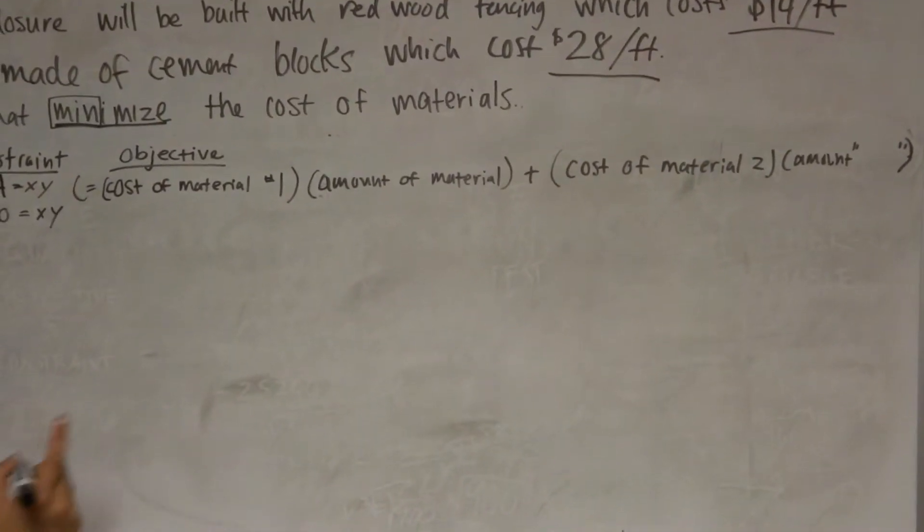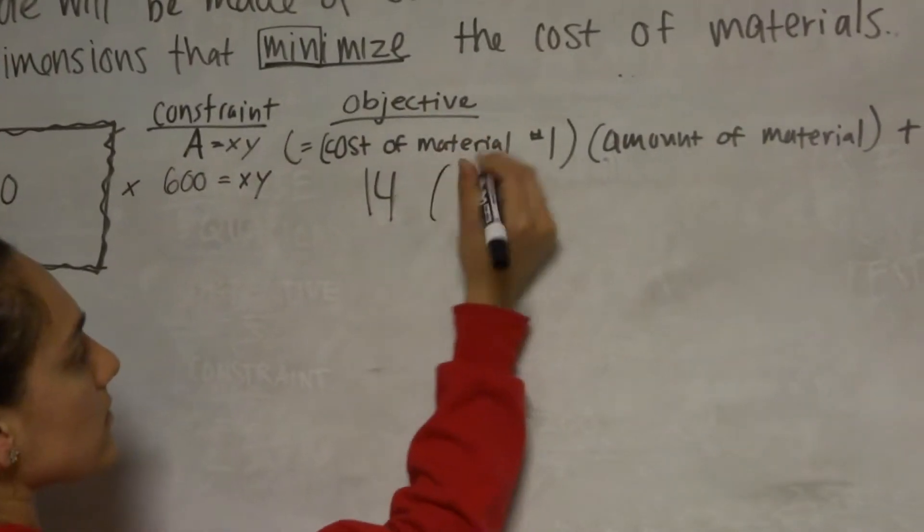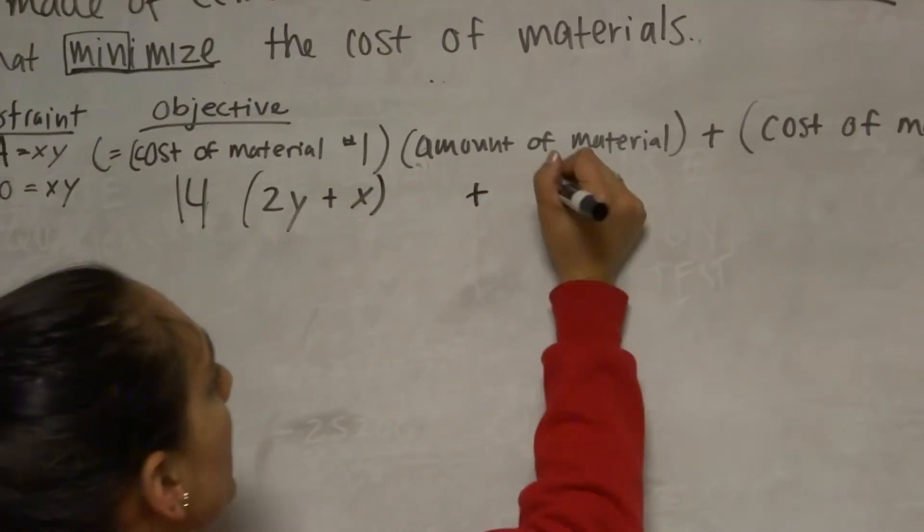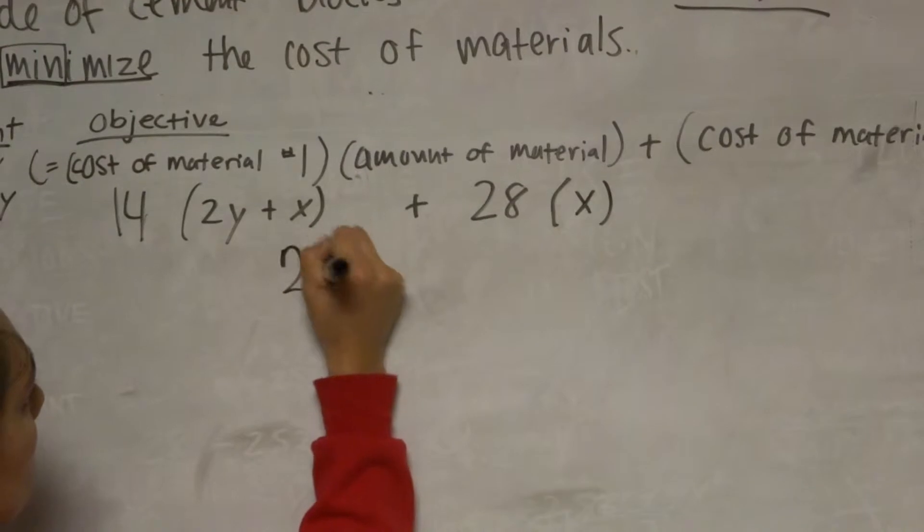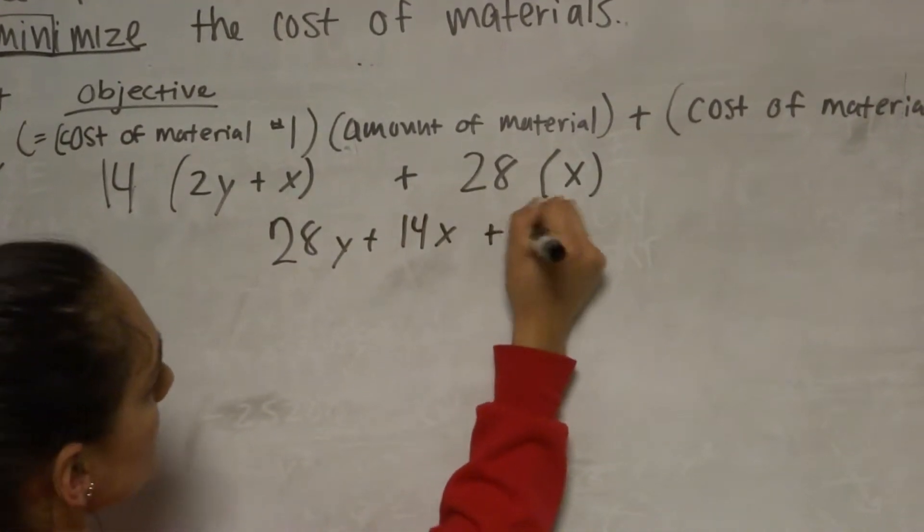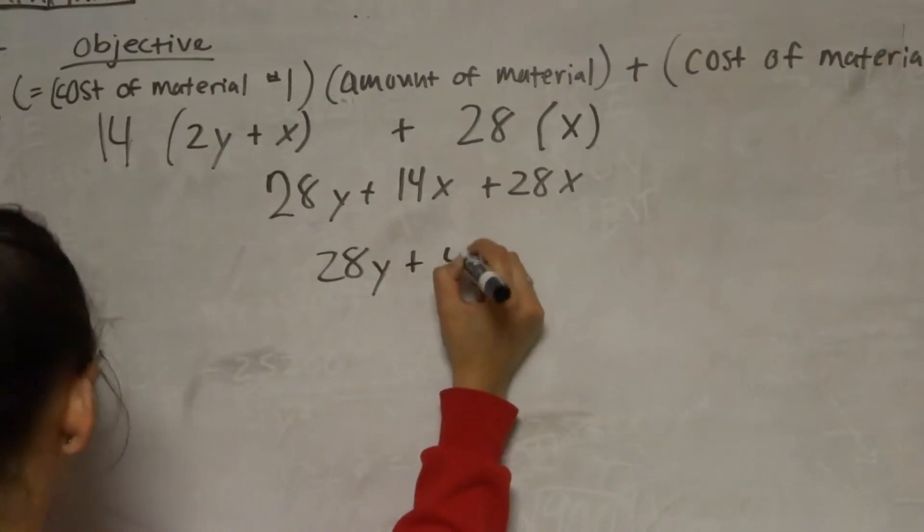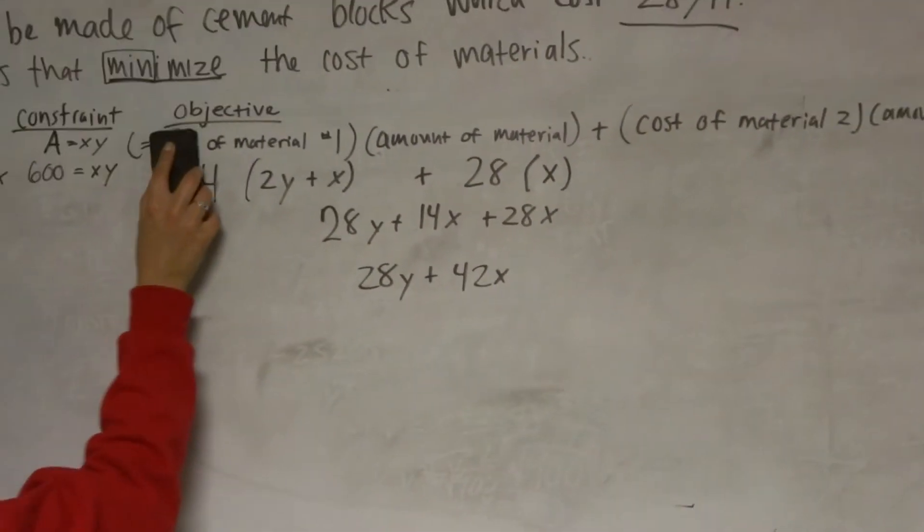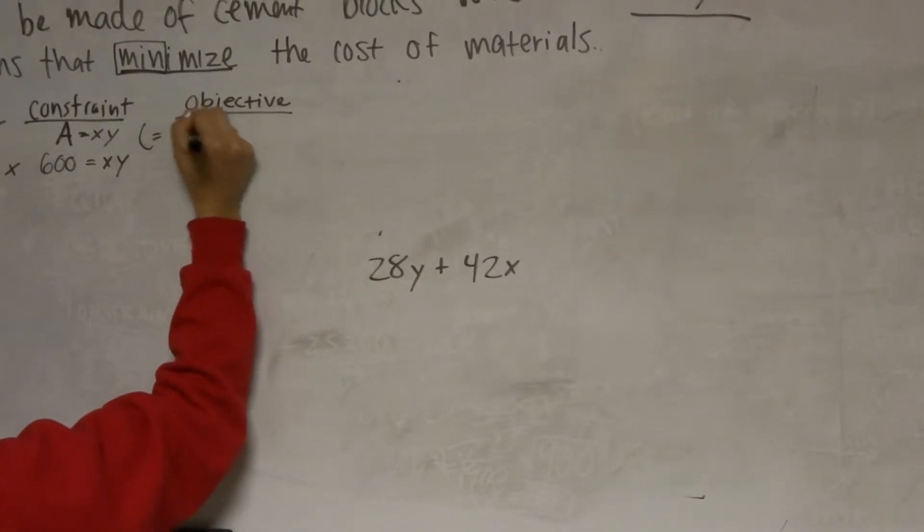Now we can just plug in the numbers. Our first material is $14, which is the redwood fencing, and it has three sides, so two y's and an x. So multiply that by 2y plus x. Then we add the second material, which is $28, times the amount, which is just one side. It says x, sorry for the other way. You can multiply this out, and you get 28y plus 14x plus 28x, which simplifies to 28y plus 42x. I'm going to erase all this for space, but that's how you get the objective equation.